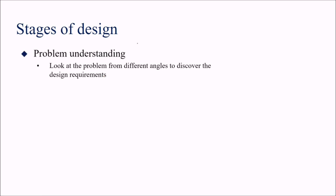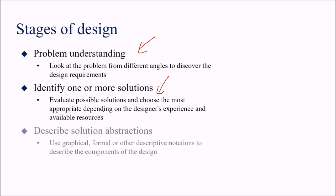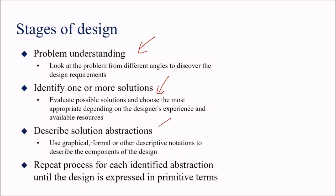There are various stages of design. First, you understand the problem — looking at it from different angles to discover design requirements. Then you identify one or more solutions, evaluating possible solutions and choosing the most appropriate based on designer experience and available resources. Then you describe the solution abstraction using graphical, formal, and descriptive notations such as UML. You repeat this process for each identified abstraction until the design is expressed in primitive terms.